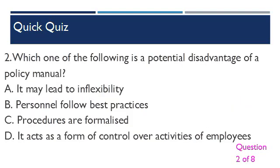Question 2: Which one of the following is a potential disadvantage of a policy manual? A. It may lead to inflexibility. B. Personnel follow best practices. C. Procedures are formalized. D. It acts as a form of control over activities of employees.